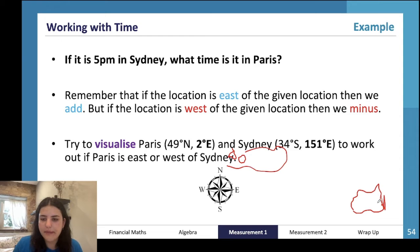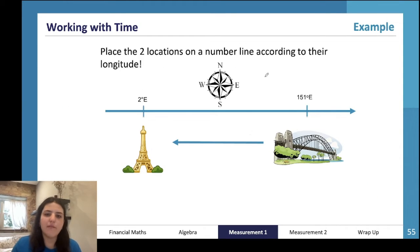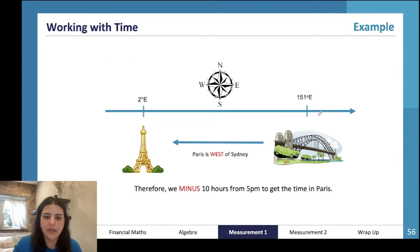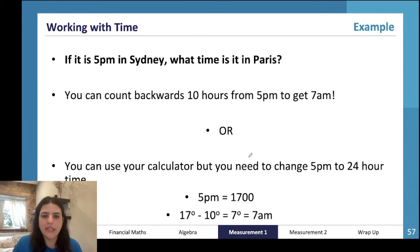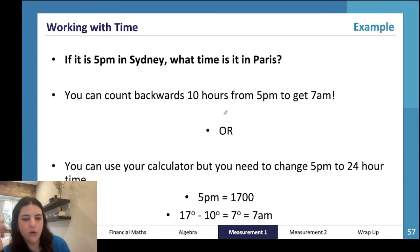This is where we are, this is 10 hours behind. Paris 2 degrees east, Sydney 151 degrees east. We minus 10 hours from 5 p.m., which is going to give us 7 a.m. I like to do it in my head, or you can do it on a calculator, but you have to change it to 24 hour time. You can also just minus 12 hours and then add 2 back to it.